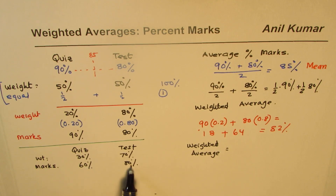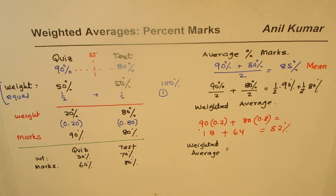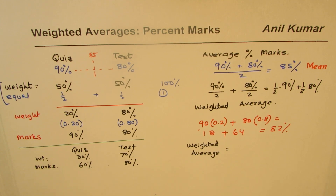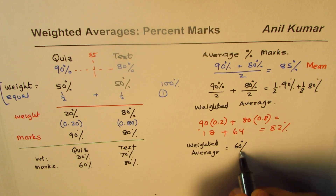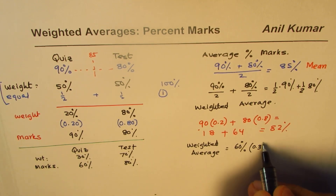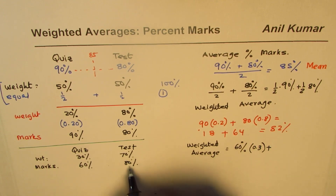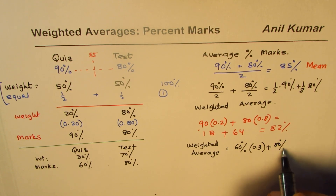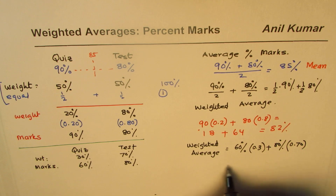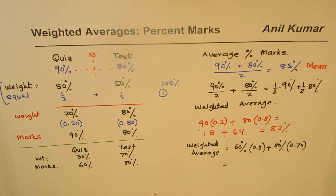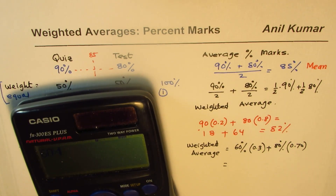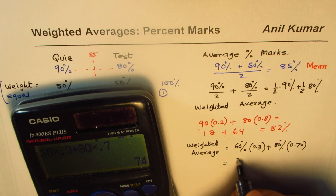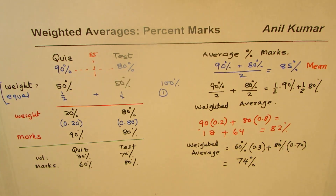As expected, the weighted average will be closer to 80 percent — not 70, not a mid value, but closer to 80. We multiply marks by weight: 60 percent times 0.30 plus 80 percent times 0.70. Calculating: 60 times 0.3 plus 80 times 0.7 gives us 74 percent as the weighted average.